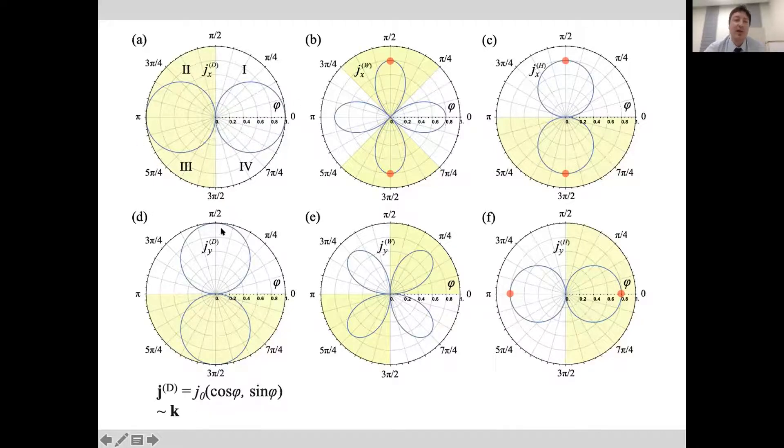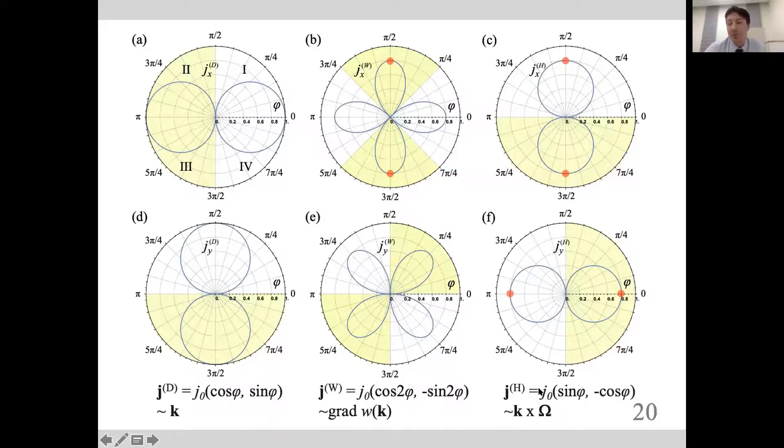The situation is more interesting in the warping component. Here we get cosine of 2φ and sine of 2φ coming from the trigonal warping on the valleys. You see petals of different forms. In particular, the x current can be non-zero where the conventional current is zero if the angle is π/2 with respect to the x-axis. Interesting features also happen with the Hall current. Here sine and cosine exchange their places, so we have the inverse situation to the conventional drag effect.